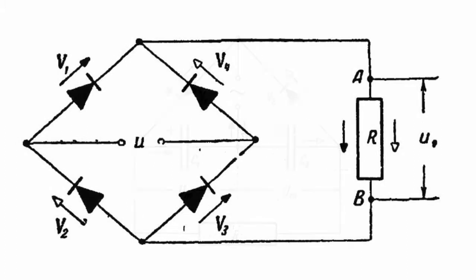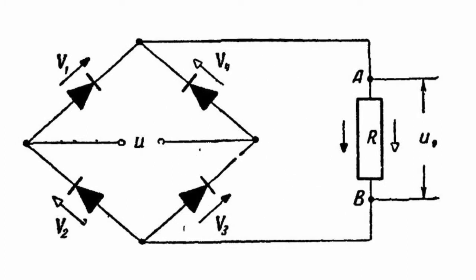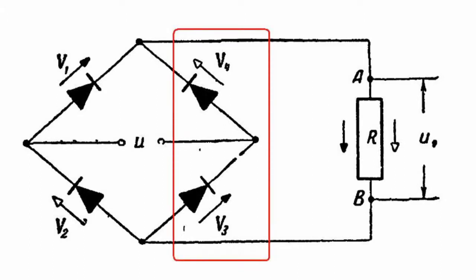We'll build it based on a regular full-wave rectifier circuit. Let's replace rectifiers V3 and V4 with capacitors C1 and C2 of the same capacity.